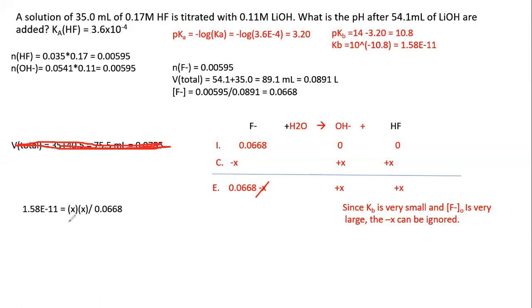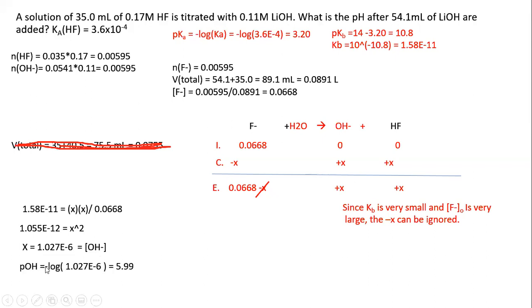We set up the equilibrium expression and solve for x. We get x = 1.027 × 10⁻⁶, which is also the hydroxide ion concentration. We find the pOH and then the pH. The pH at the equivalence point is 8.01.